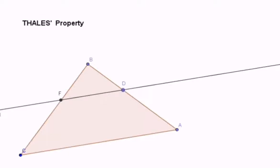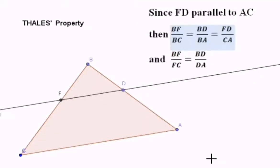If DF is parallel to AC, then we have equal ratios. What are these ratios? Thales discovered these ratios. Since FD is parallel to AC, then BF over BC is equal to BD over BA is equal to FD over AC. You can note that the numerators BF, BD, FD are the sides of the small triangle BFD.